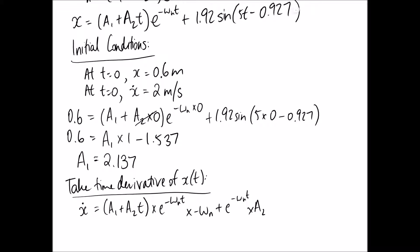So now we need to take the derivative of the second term here, and that's going to be 1.92, sine goes to cos, and then we need to multiply by the derivative of what's here, which is just the number 5.